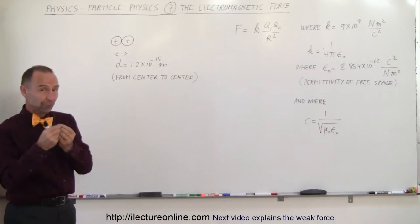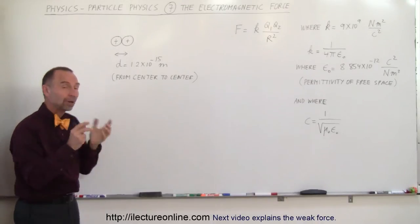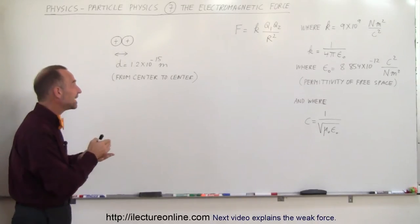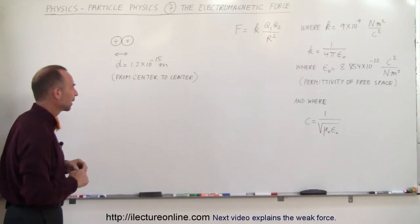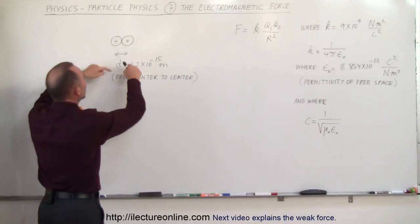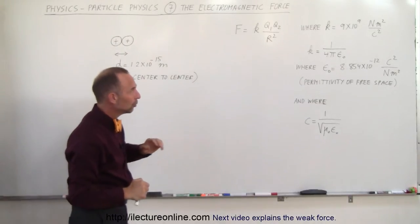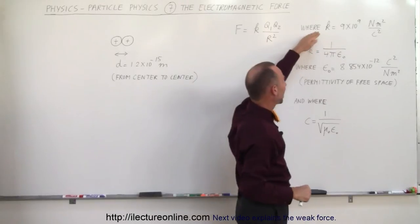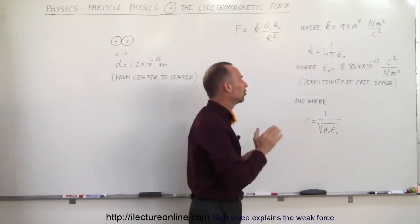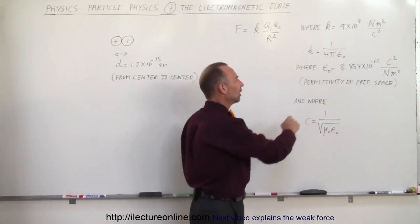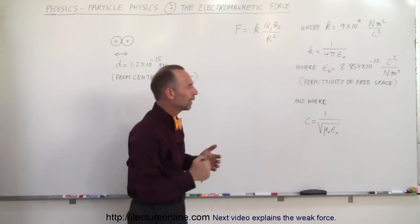The question is, what will be the force of the repulsion, knowing that the distance between them is about 1.2 times 10 to the minus 15 meters, which is about the diameter of a single proton. That would mean the distance is from center to center. Also notice that k can be expressed as 1 over 4 pi epsilon sub nought, where epsilon sub nought is the permittivity of free space, 8.85 times 10 to the minus 12 Coulomb's square per Newton meter squared.